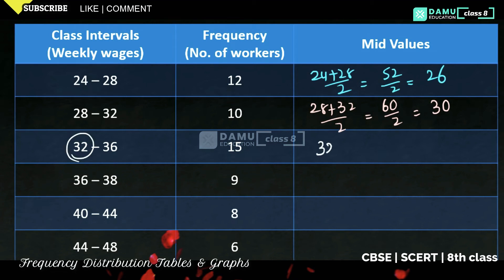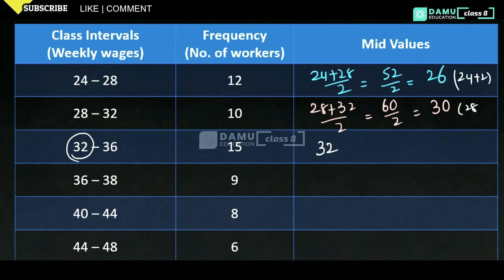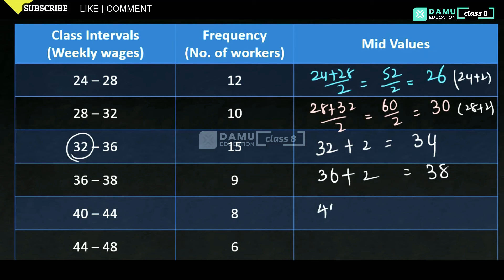Adding 2 each time: 24 + 2 = 26, 28 + 2 = 30, 32 + 2 = 34, 36 + 2 = 38, 40 + 2 = 42, 44 + 2 = 46. So the mid values are 26, 30, 34, 38, 42, and 46.